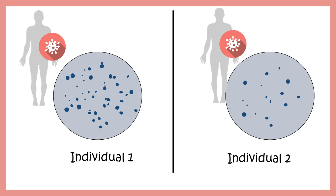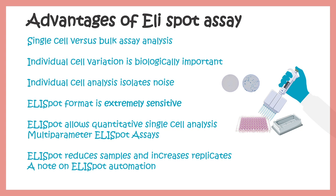To summarize the advantages of ELISPOT assay: it enables single-cell versus bulk analysis, capturing individual cell variation which is biologically important. The assay is extremely sensitive, requiring very little sample — important in clinical settings. It allows quantitative measurement and reduces the sample volume required. ELISPOT is also cost-effective and widely used in the medical community. It is especially preferred by immunologists to determine what types of cells are present during a particular immune response.